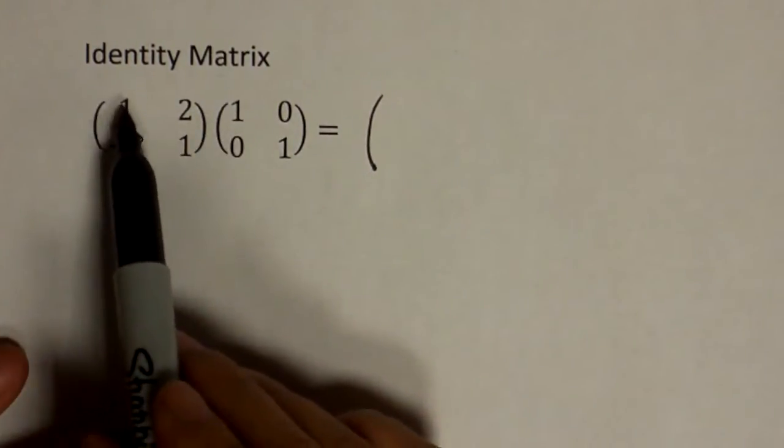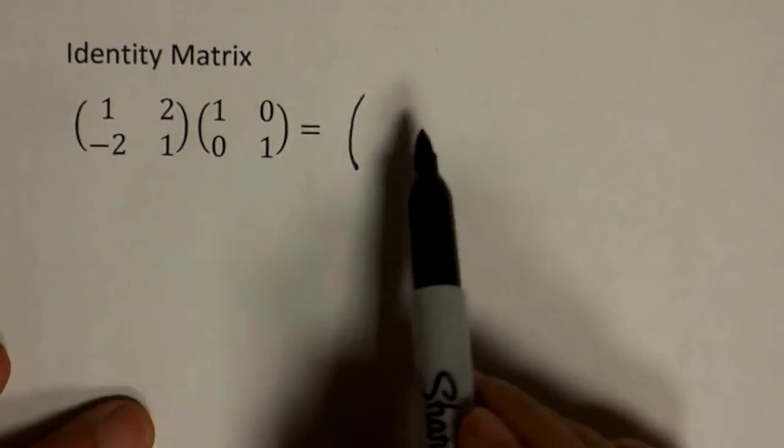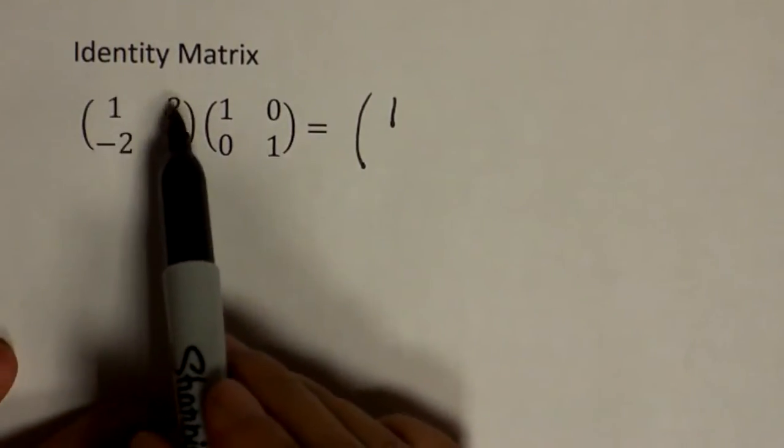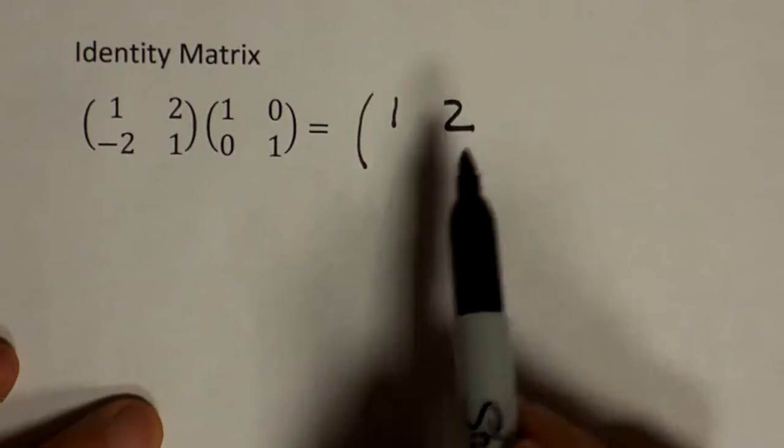Across, down. One times one is one. Two times zero is zero. So it's just one. Across, down. Zero times one is nothing. Two times one is two. So that's what you have.